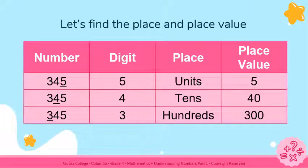Let's find the place and place value now. You can see a table with four columns: number, digit, place, and place value. We are going to find the place and place value of the number 345. In the first row, 5 is underlined — the place of 5 is units, so the place value remains as 5. In the second row, 4 is underlined — it is in the middle, the place is tens, so the place value is 40. In the last row, 3 is underlined — 3 is in the hundreds place, and the place value is 300.